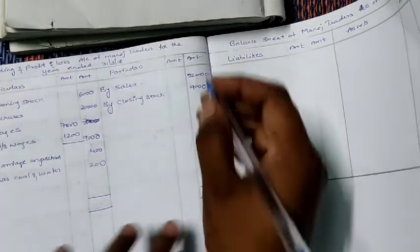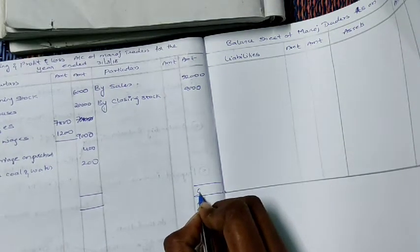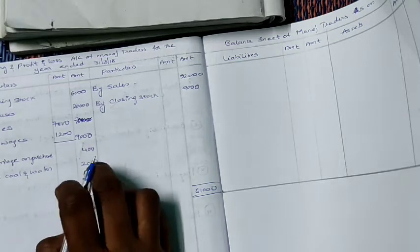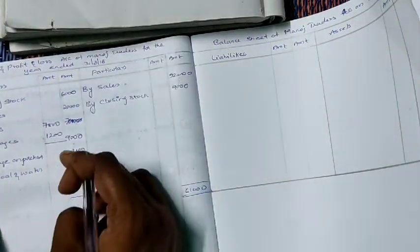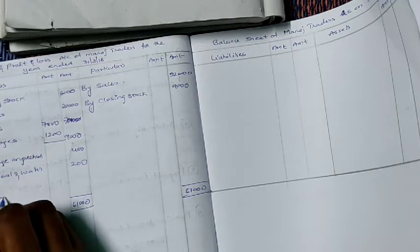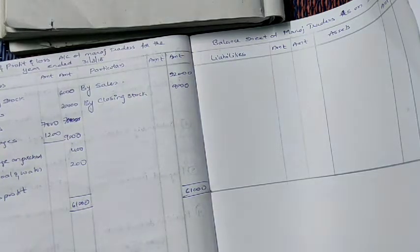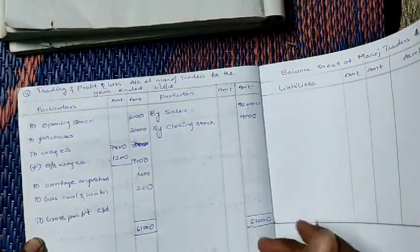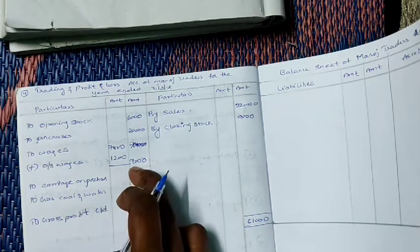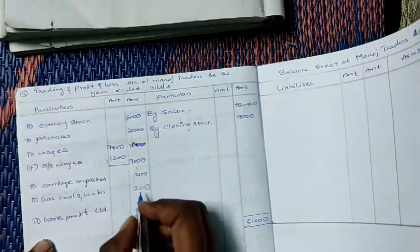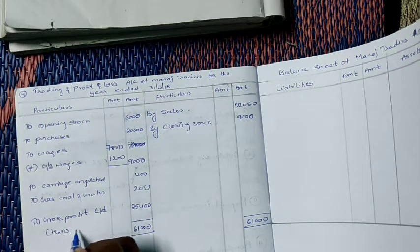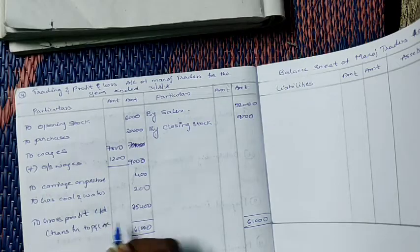Debit side total is 35,600. Credit side: 61,000 — that is 52,000 plus 9,000. Credit is more. The balance is gross profit carried down. 61,000 minus 35,600 gives gross profit of 25,400. This gross profit you have to transfer to P&L account.